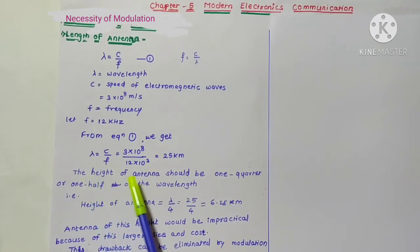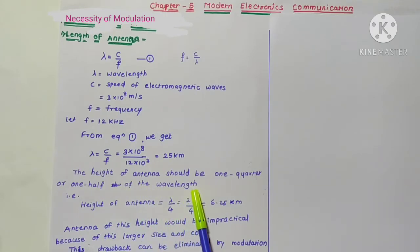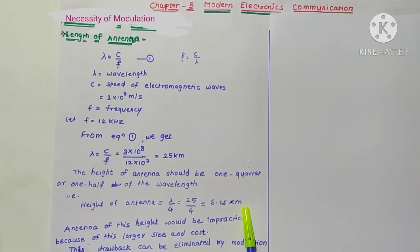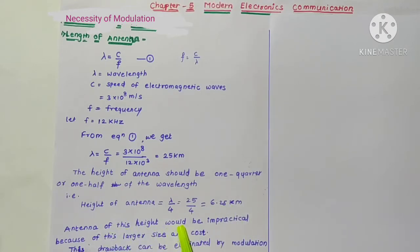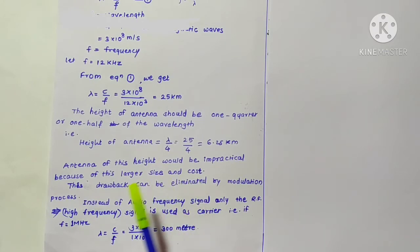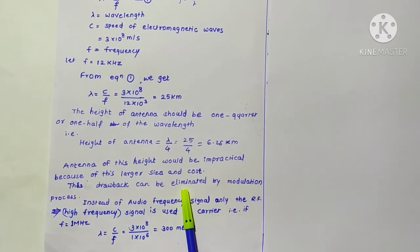The height of the antenna should be one-quarter or one-half of the wavelength. Using λ/4 = 25/4, we get approximately 6.25 kilometers. This height of antenna is impractical because of its larger size and cost. This drawback can be eliminated by the modulation process.